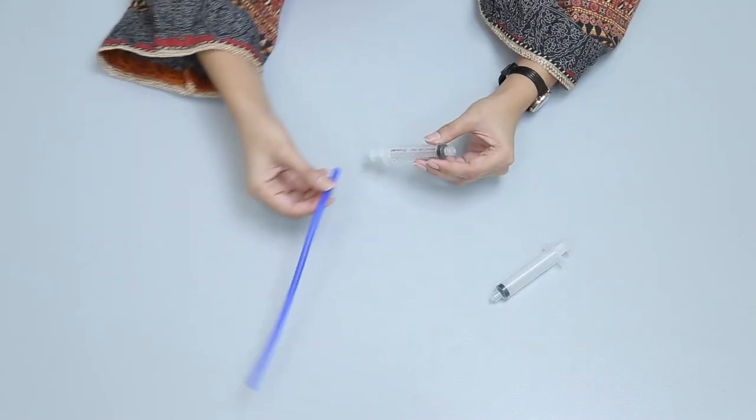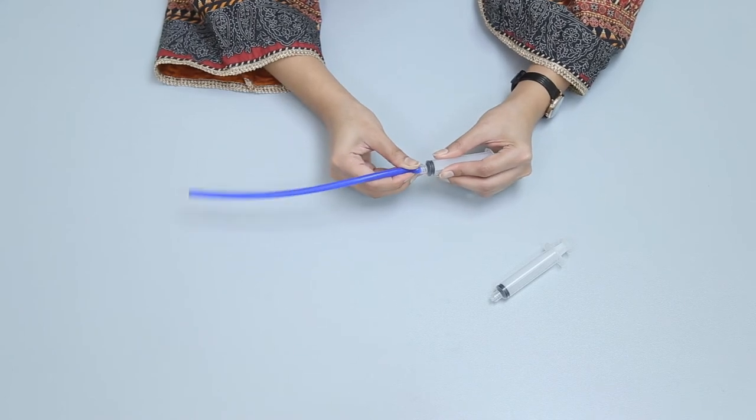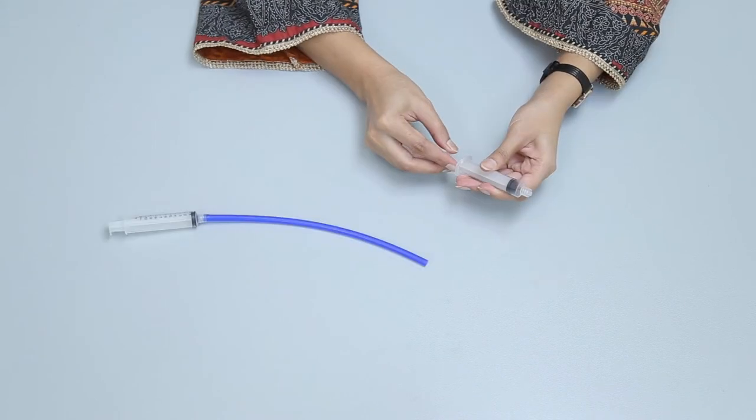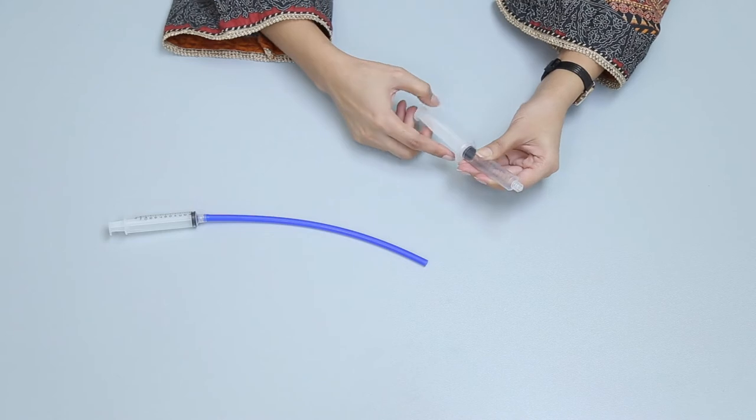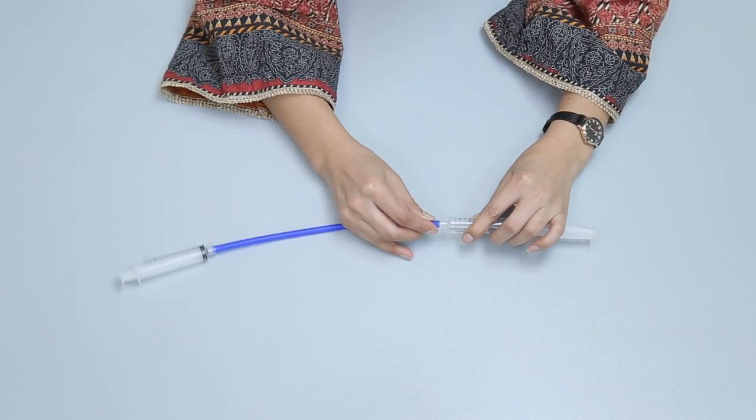Close the plunger of one syringe and attach one end of the silicon tubing to the tip of the syringe. Now open the plunger of the other syringe and attach its tip with the second end of the silicon tubing.